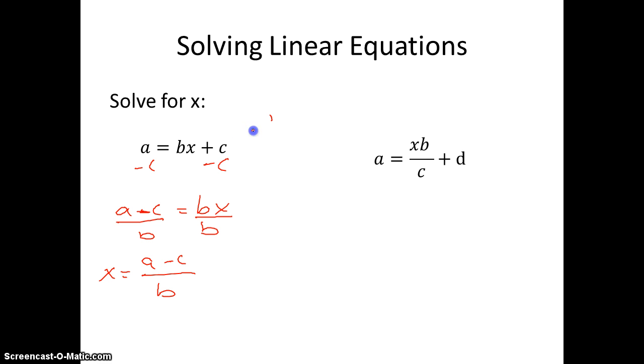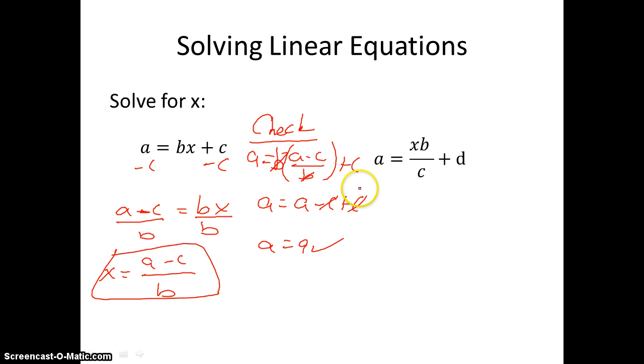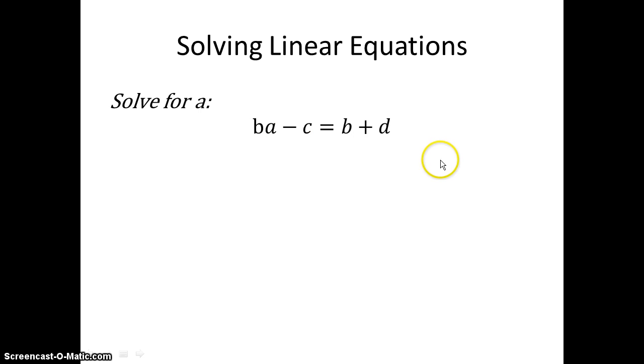So I have my check here. Check here. a equals b times a minus c divided by b plus c. Now when I distribute this or when I multiply this in, my b's are going to cancel. So that just gives me a equals a minus c plus c. Negative c plus c cancels each other out. So I get a equals a, which is a true statement. And that's what you're looking for, a true statement at the end. So that works with that.